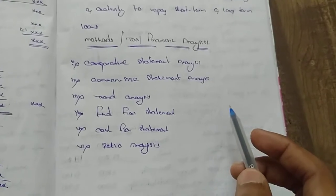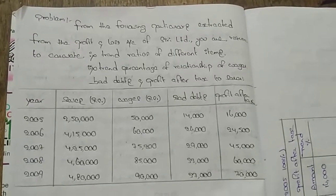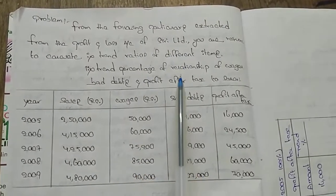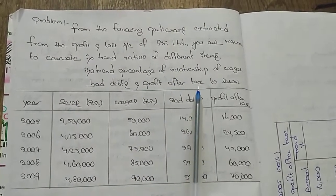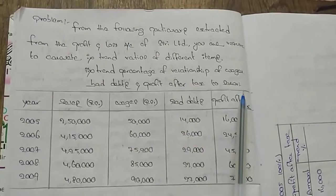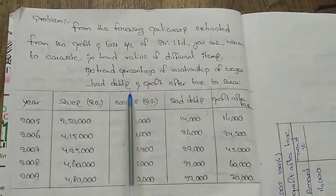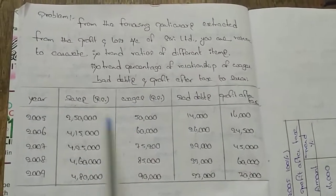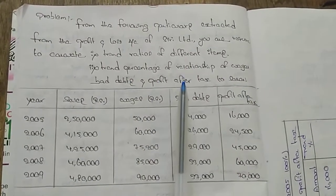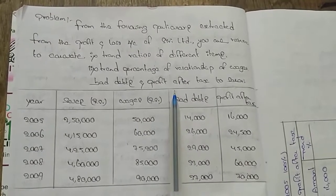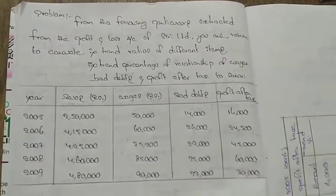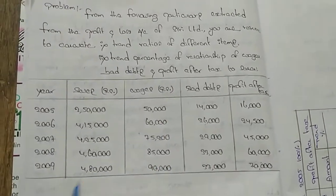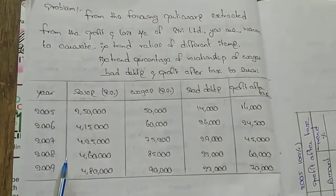Now, trend analysis — the questioning format: this is one type of questioning format. From the following particulars, from the profit and loss account of Siri Limited, you are required to calculate the trend ratio of different items — trend ratio, trend percentage — and the relationship of various bad debts and profit after tax to sales.